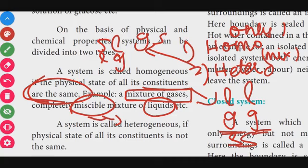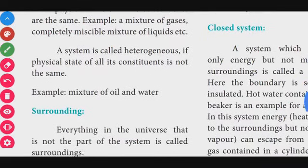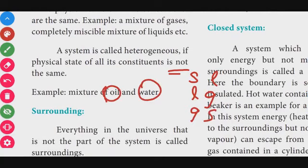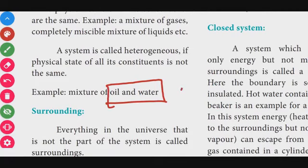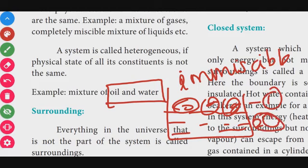An immiscible liquid example is water and oil. Water and oil do not dissolve in each other — oil floats on water, forming two separate layers: an oil layer on top and a water layer below. This makes it a heterogeneous system. The surroundings are everything in the universe that is not part of the system.